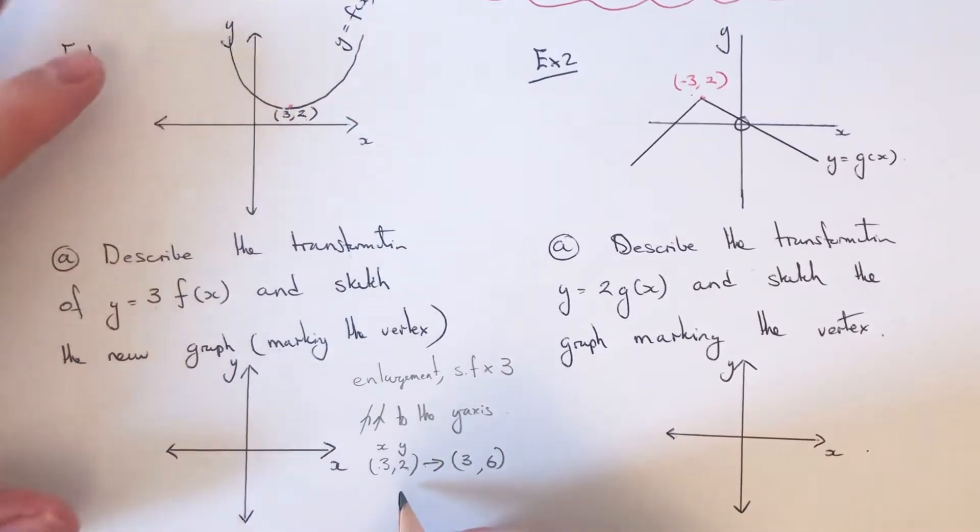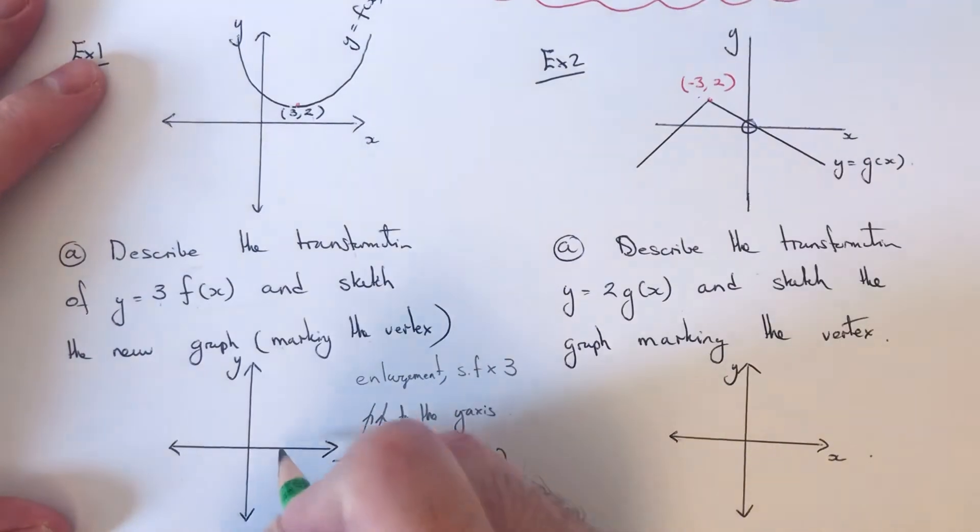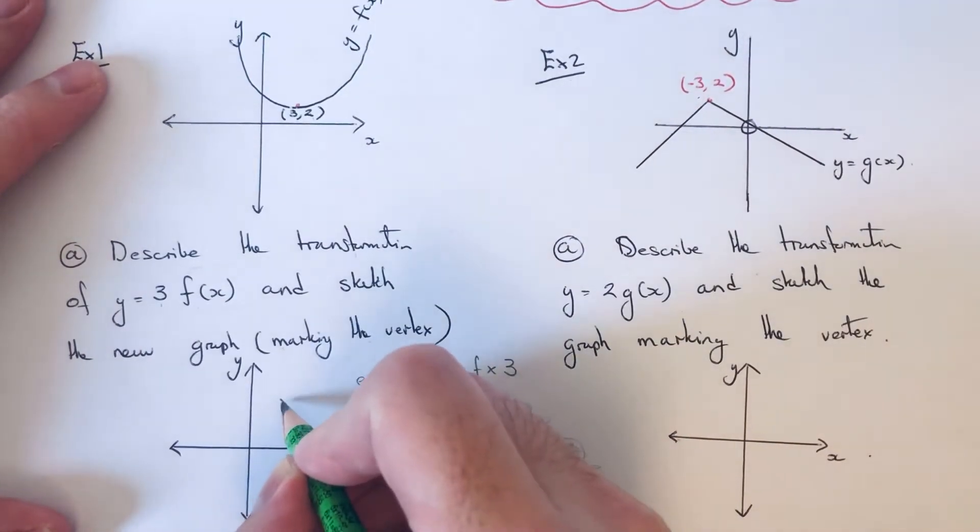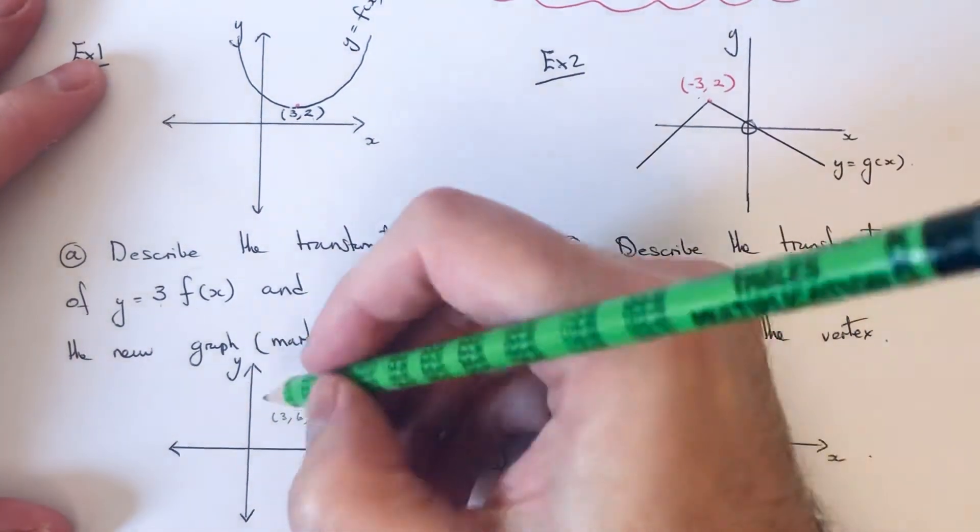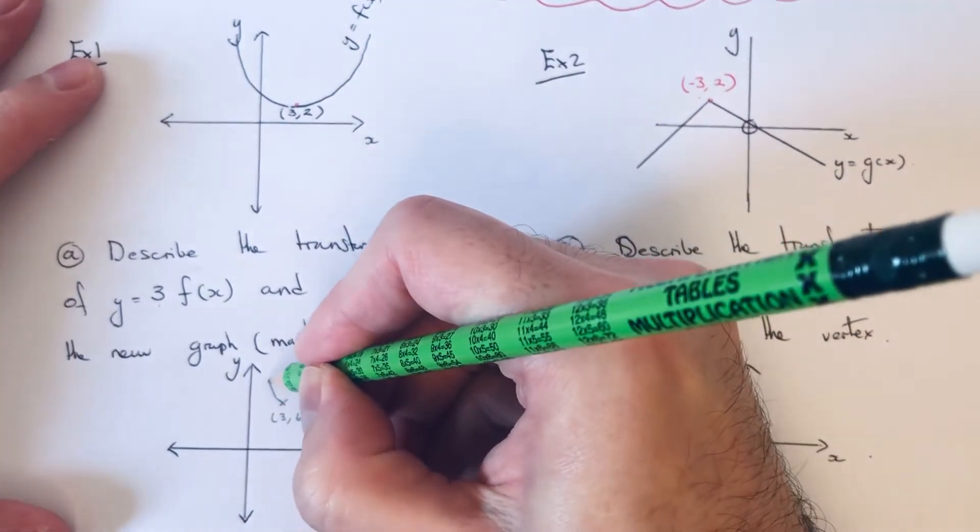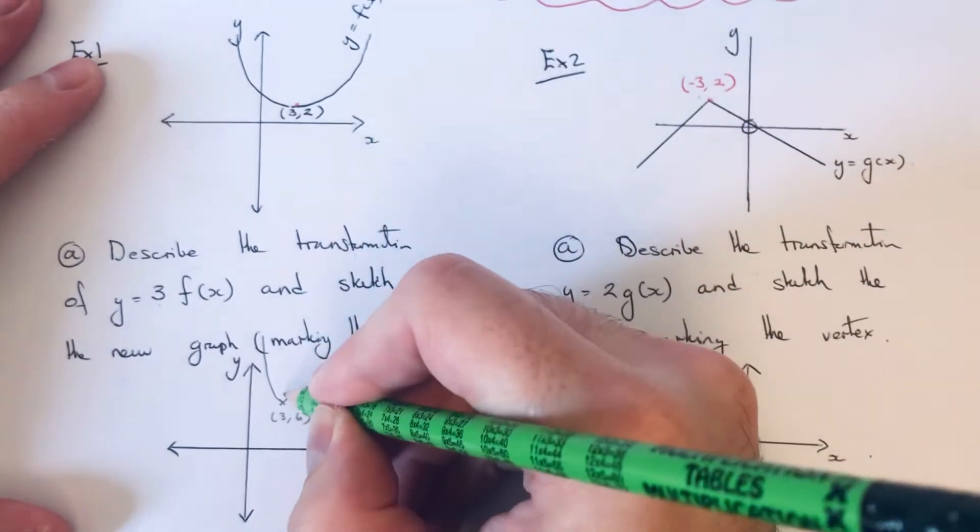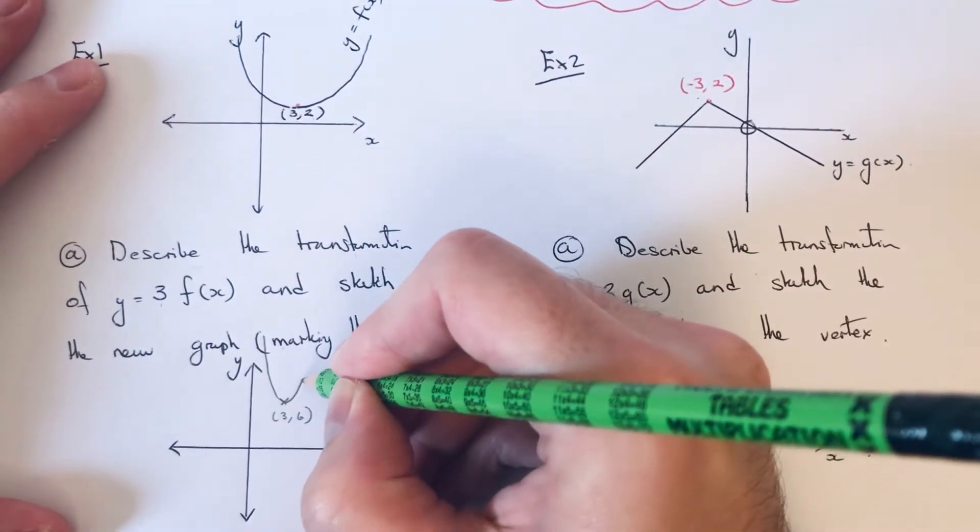So that will become 6. 2 times 3 is 6, and we have the x coordinate the same. So the vertex would be at 3 comma 6 instead of 3 comma 2, and then the graph will be stretched so it will be a little bit thinner than what we had before.